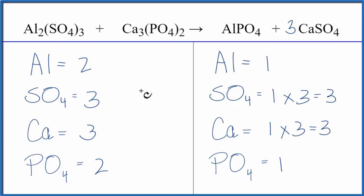Let's do the aluminums next. We have two here and one here. Put a coefficient of two in front of the aluminum phosphate. One aluminum times two, that gives us two. They're balanced. One phosphate times two, that gives us two, and we're done. The equation is balanced.